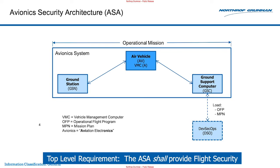Here's the avionics security architecture. There are four main subsystems. Each of those subsystems has been loaded or provisioned with Northrop keys and digital certificates. At the heart of an operational mission, for the air vehicle, is the vehicle management computer — that's our flight computer. That flight computer needs two things to execute a mission successfully: an OFP, the operational flight program, which is basically the flight software, and a mission plan.